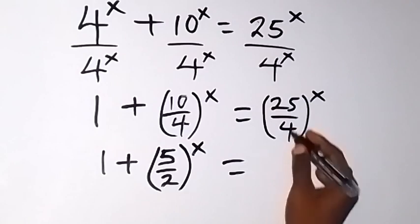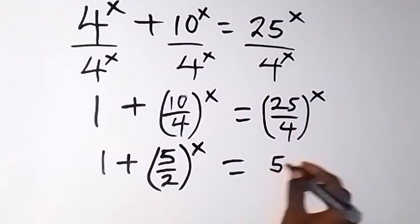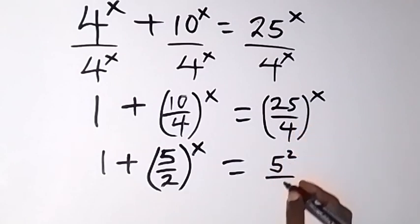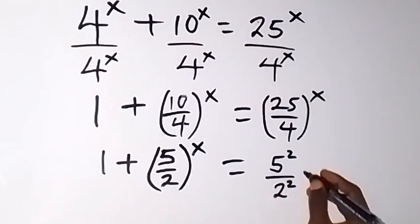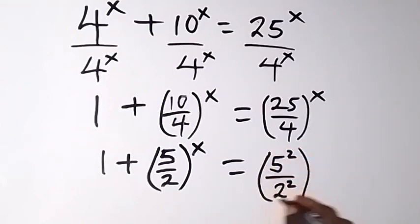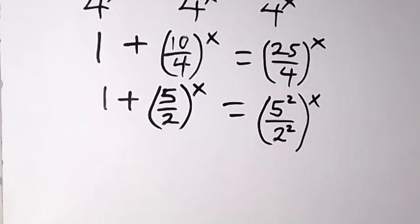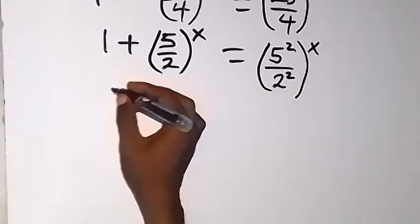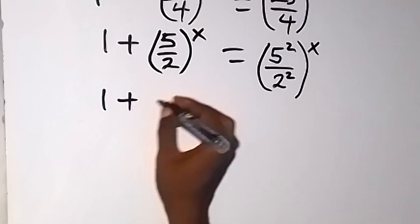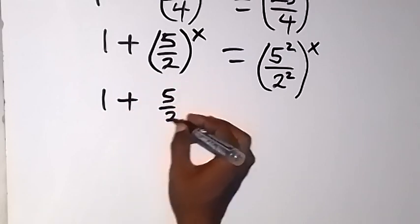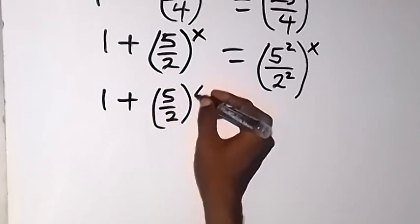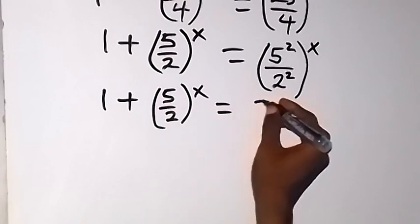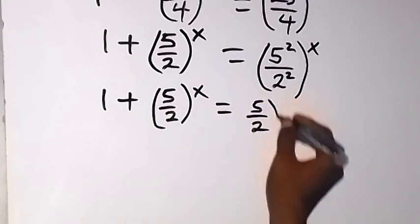We can change the right side: 25 can be written as 5 raised to power 2, and 4 can be written as 2 raised to power 2, making it 4 raised to power x. We can see we have power 2 and power 2, so we can take them out and have 1 plus 5 over 2 raised to power x equals 5 over 2 raised to power x.